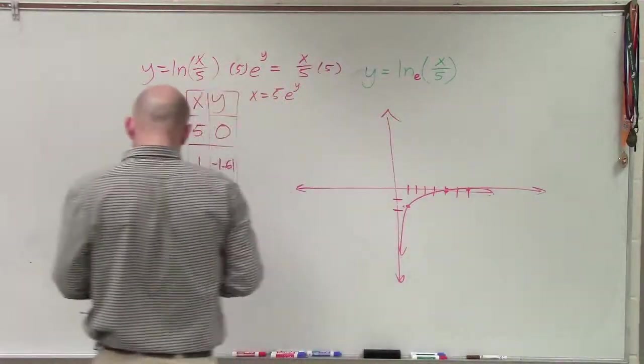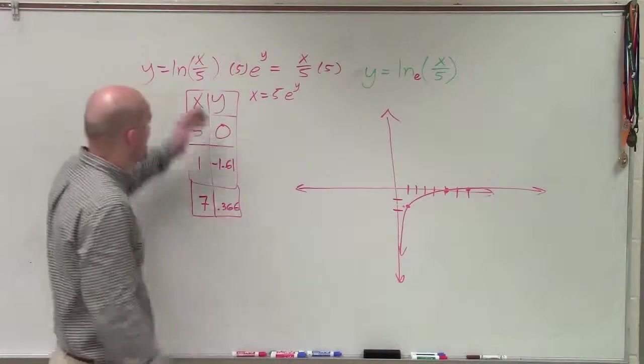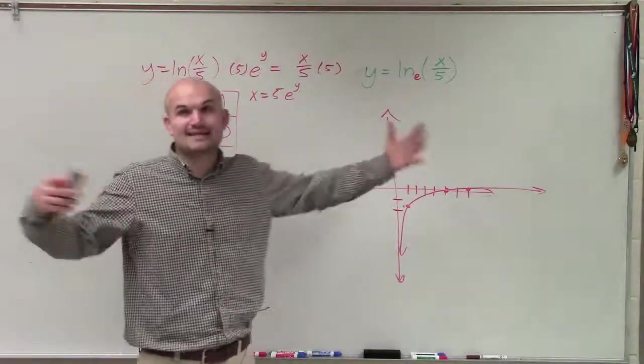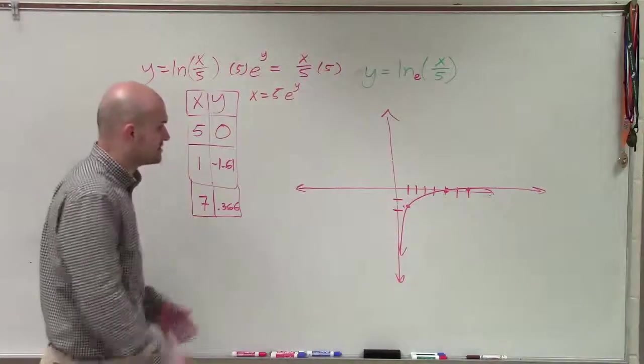And the reason why is because we're multiplying it by this value of 5. And that's what, when it comes into that value x divided by 5, what that's doing is actually expanding that graph. So therefore, now I am going to have a new x-intercept.